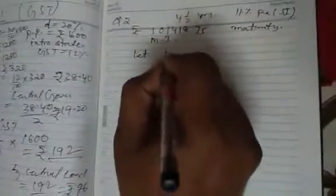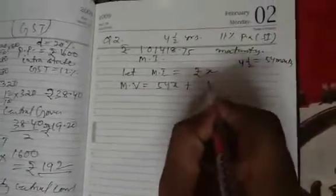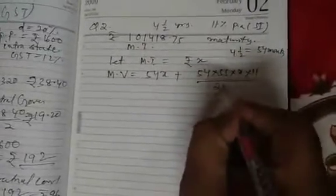Find the monthly installment paid by him. So for that, let us take the monthly installment equal to Rs. X. Therefore, the maturity value is equal to total time is given 4 and half years, that is equal to how many months? That is 54 months.